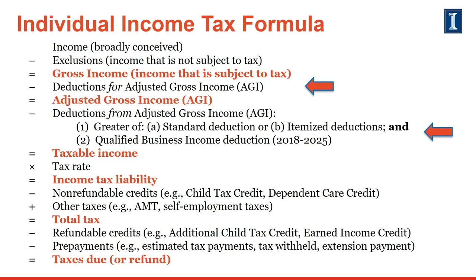Deductions from AGI tend to be more personal in nature. Before 2018, from-AGI deductions included itemized deductions or the standard deduction, whichever was greater, and personal and dependency exemptions. As of 2018, however, the Tax Cuts and Jobs Act added a new from-AGI deduction that largely equates to 20% of a taxpayer's qualified business income, and eliminated personal and dependency exemptions altogether. Note that the 20% qualified business income deduction is not an itemized deduction, so it does not influence whether itemized deductions are greater or less than the standard deduction.